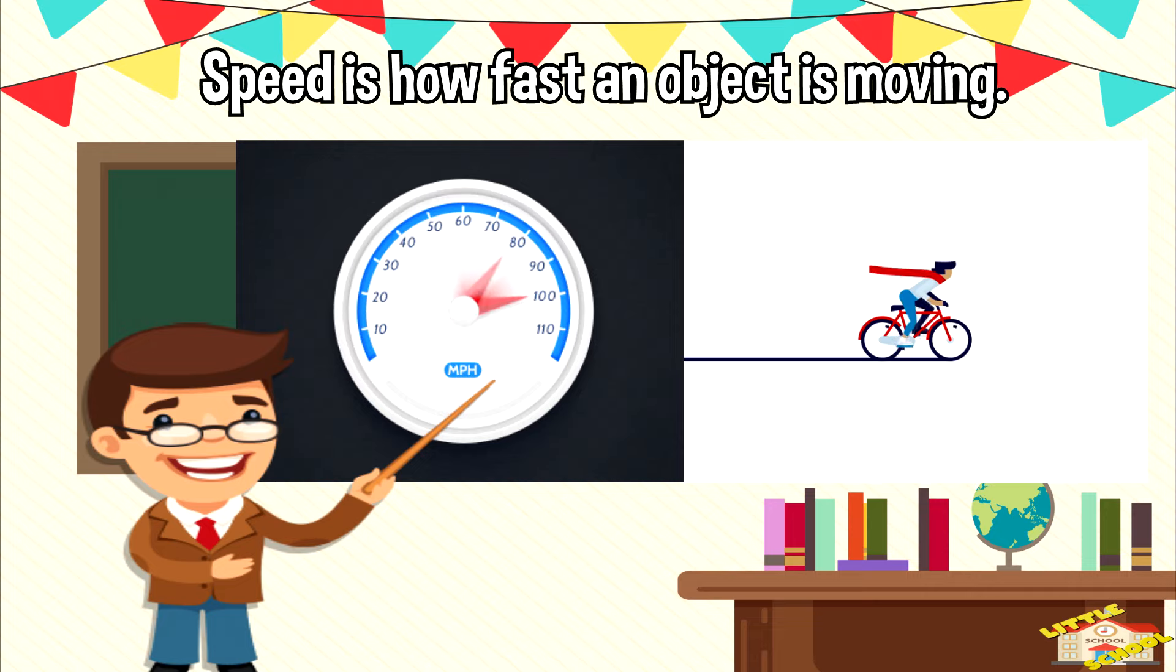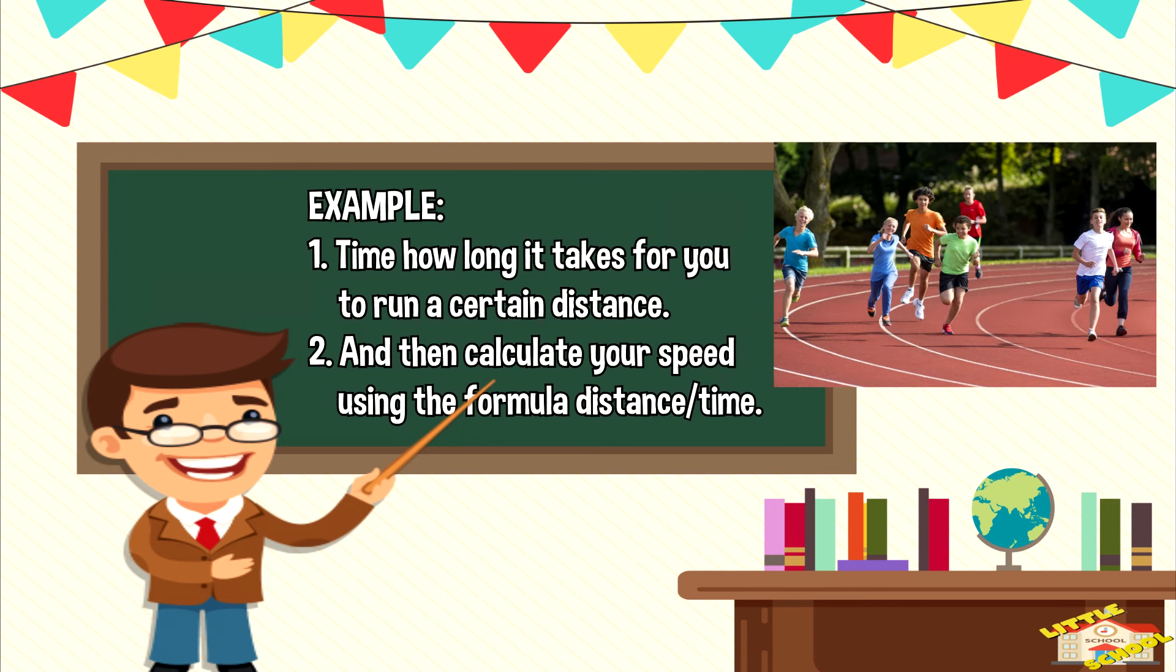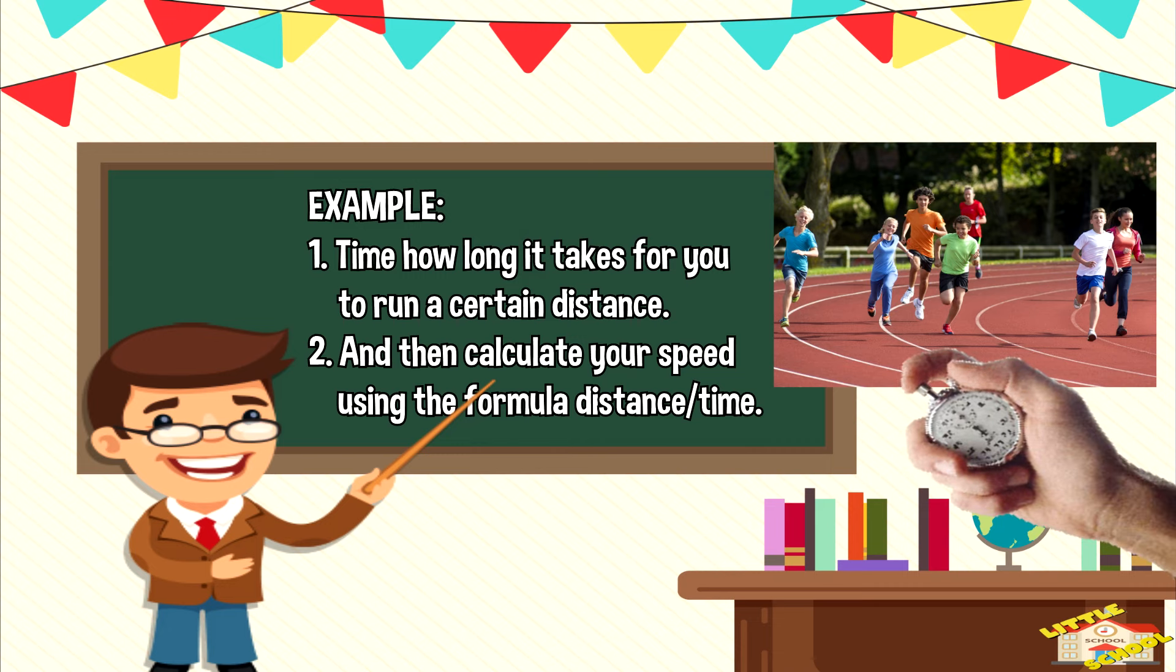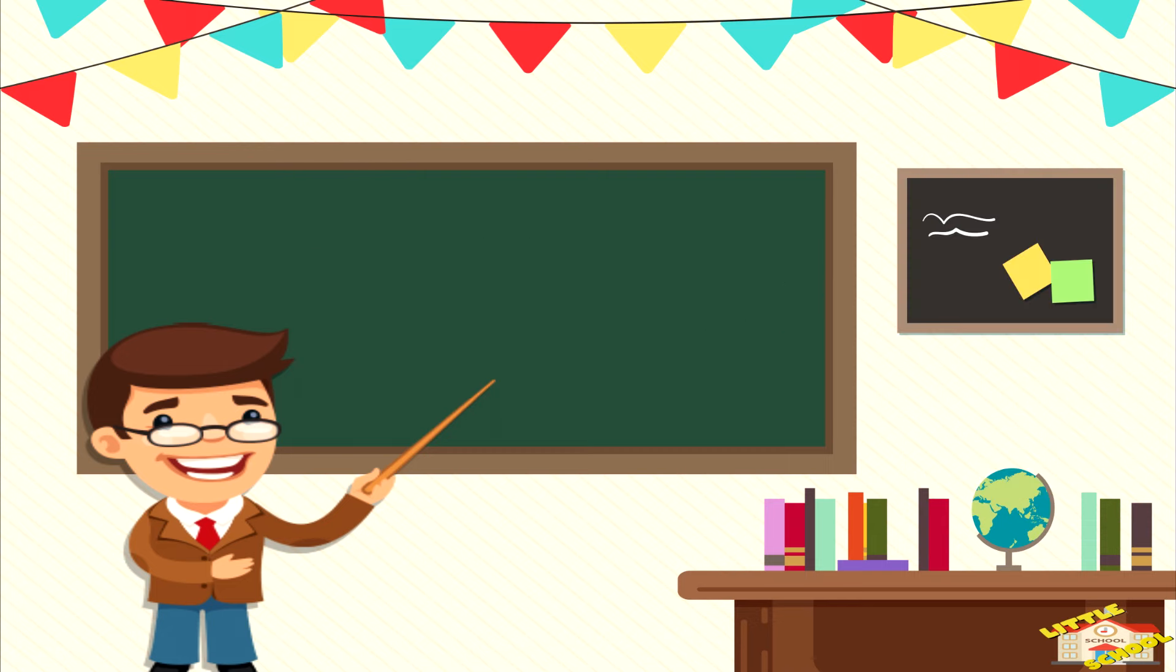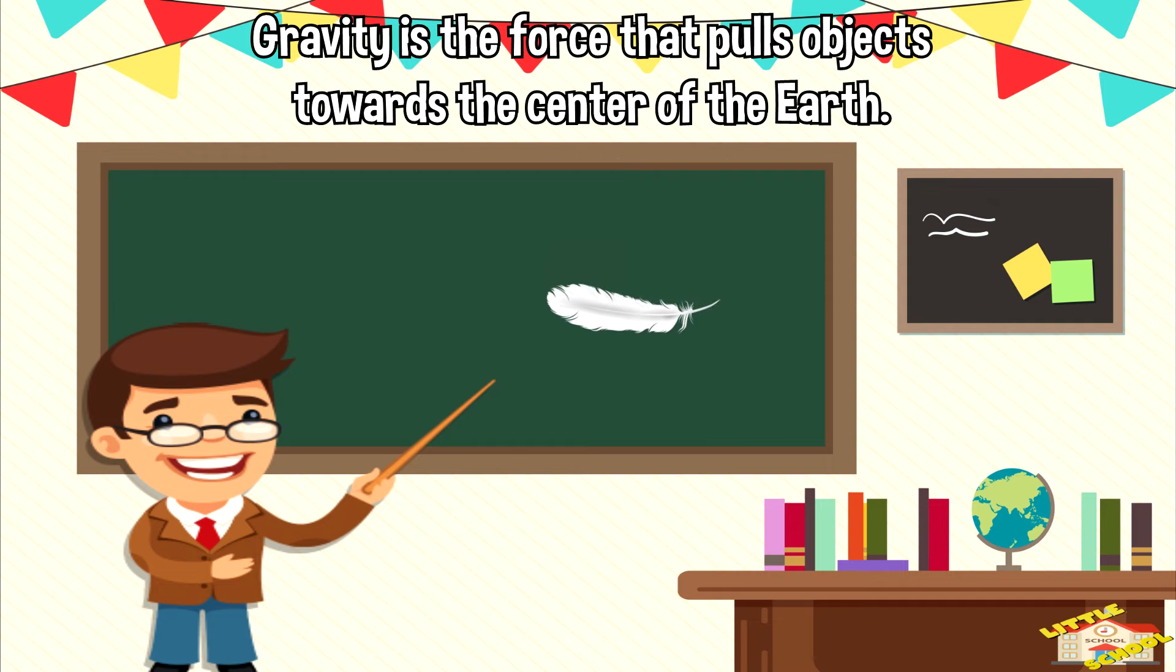What is speed? Speed is how fast an object is moving. Here's an example of speed: time how long it takes for you to run a certain distance and then calculate your speed using the formula distance divided by time.